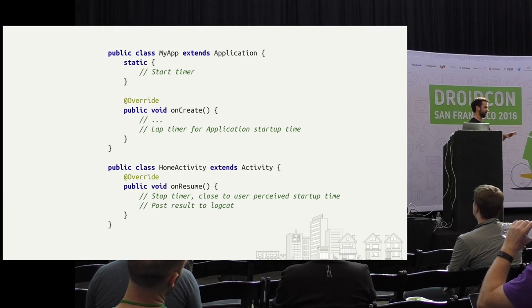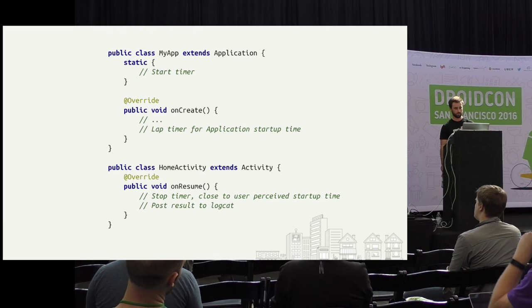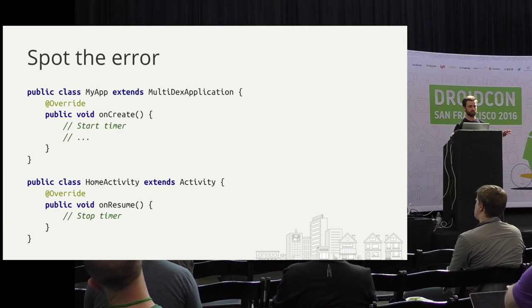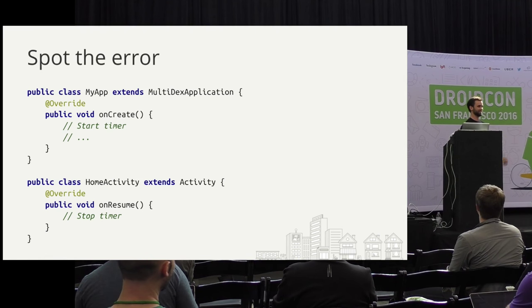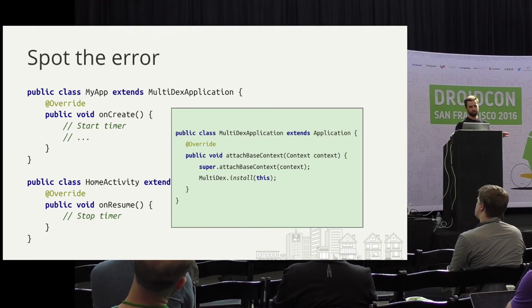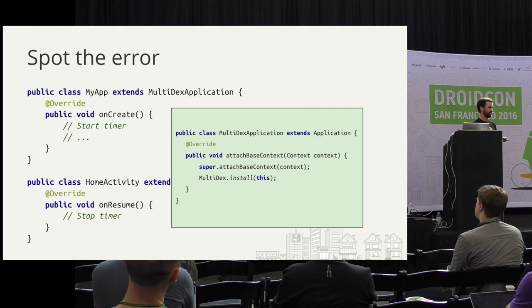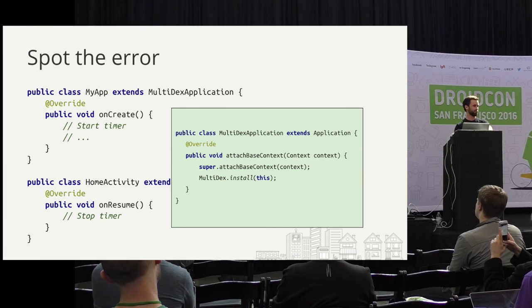You could go more hardcore and stop it in onDraw of a custom view, but I don't think that's necessary to get a good idea of application startup time in general. So who can spot this error? We've got an app extending MultiDexApplication. If I start my timer in onCreate and stop it in onResume — the MultiDex.install, whatever that is, happens in attachBaseContext, which happens before onCreate. So if you were measuring your startup performance like this, you would totally miss the entire cost of Multidexing. Performance is hard — think a lot about where you're starting and stopping your timer.